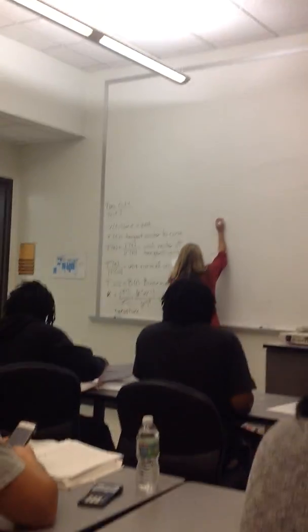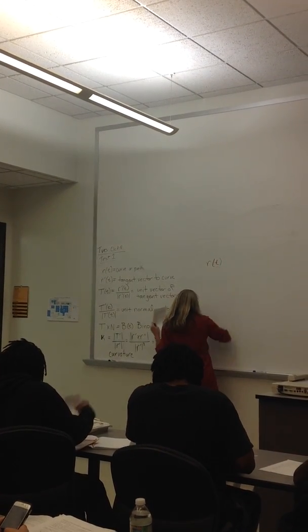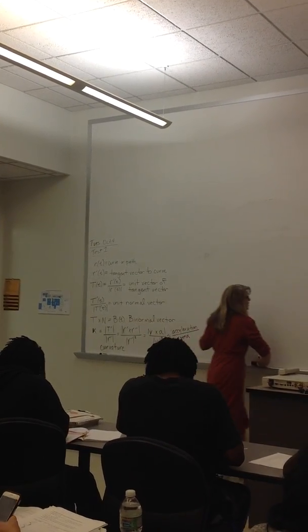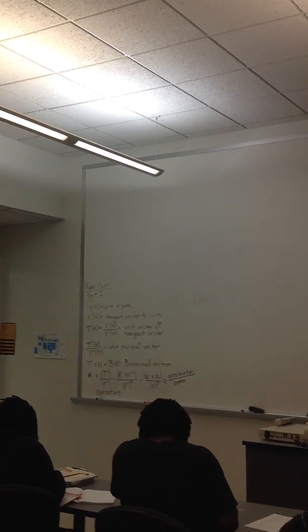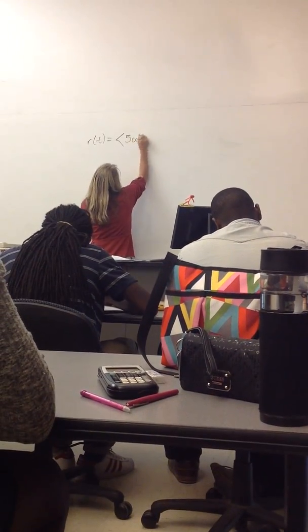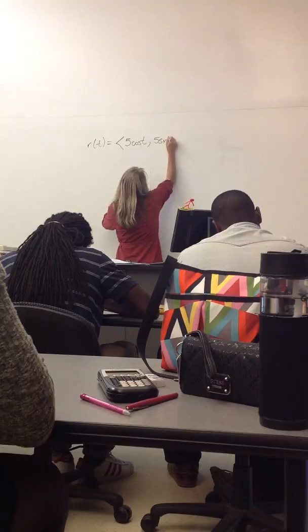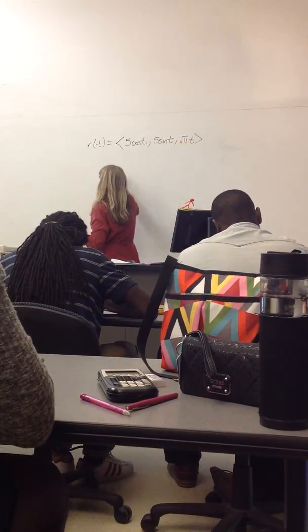So I'm repeating some of what we did together. I'll put our graph back, the graph I have back up. We were working with the path 5 times cosine of t, 5 times sine of t, square root of 11t was our path, our curve.